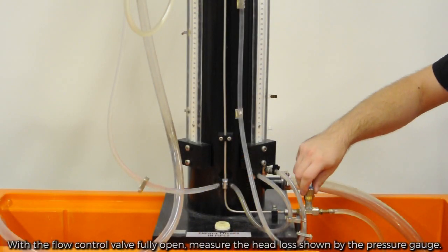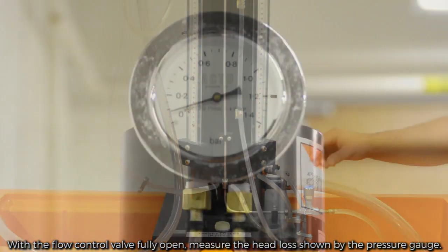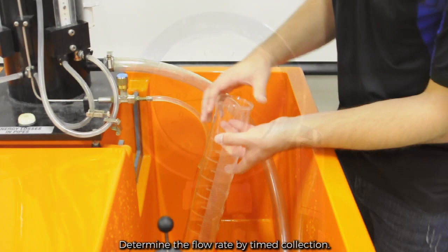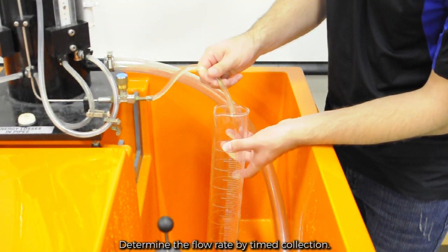With the flow control valve fully open, measure the head loss shown by the pressure gauge. Determine the flow rate by a time volume collection.